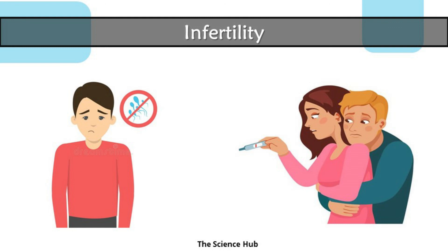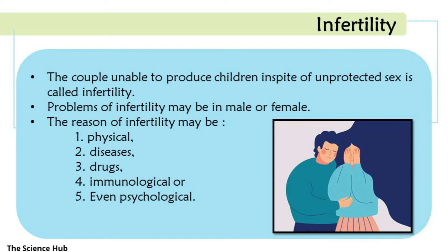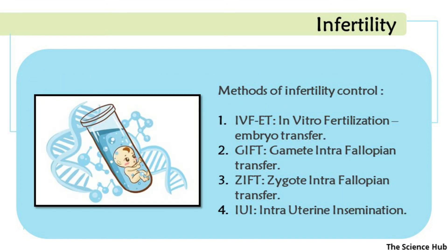Infertility is becoming a major issue today. Uneven diet, intake of unhealthy food, and prolonged exposure to radiation can affect fertility and increase infertility rates. A couple unable to produce children despite unprotected sex is called infertile. Problems of infertility may be in the male or female, and the reasons may be physical, disease-related, due to drugs, immunological, or even psychological.